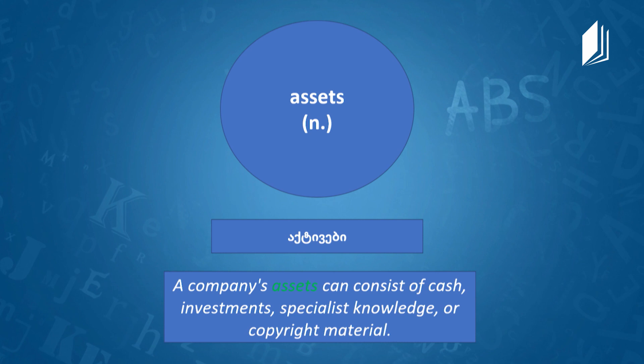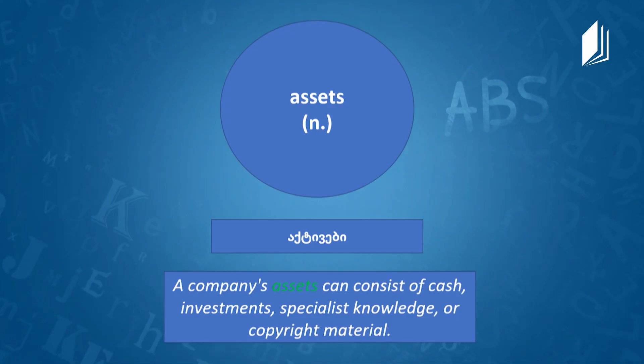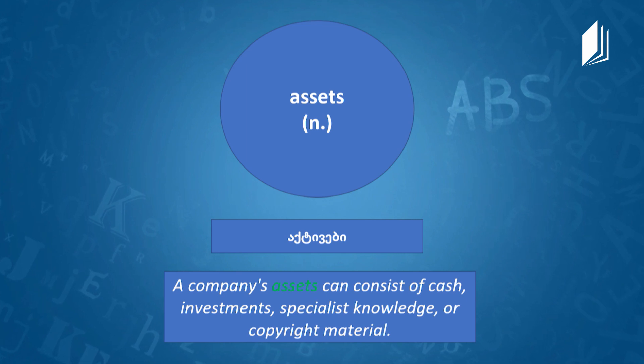The next word is 'assets' — it's a noun. Assets are something valuable belonging to a person or a business that can be used to pay debts. Example: 'A company's assets can consist of cash, investments, specialist knowledge, or copyright material.' Even knowledge can be an asset. Now we've finished with the words and it's time to practice.